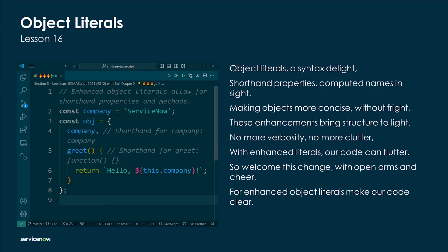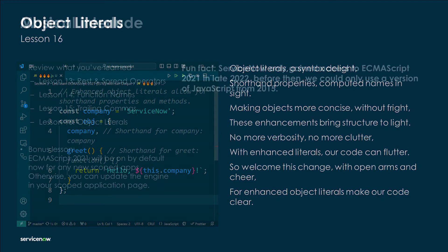Enhanced object literals — a syntax treat: shorthand properties, computed names in sight, making objects more concise without fright. These enhancements bring structure to life — no more verbosity, no more clutter. With enhanced literals our code can flourish, so welcome this change with open arms and cheer, for enhanced object literals make our code clear.